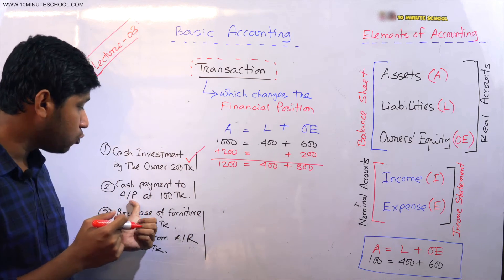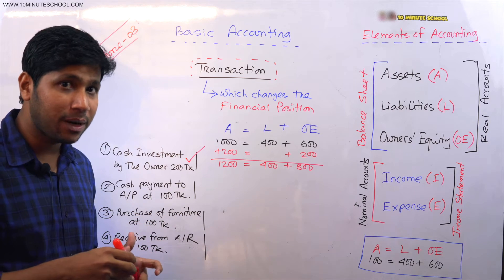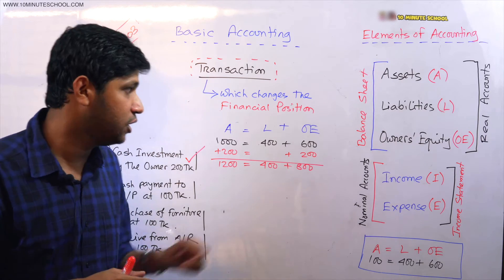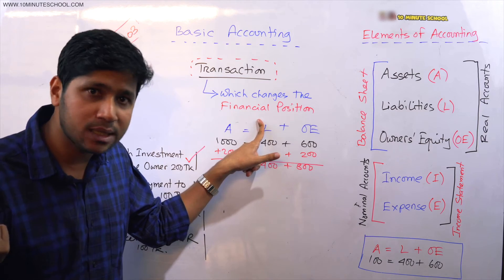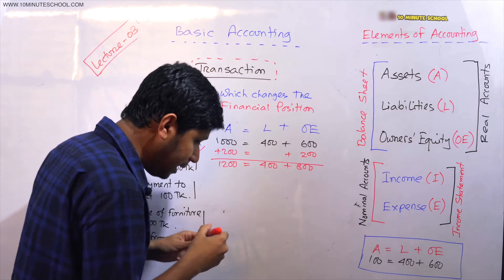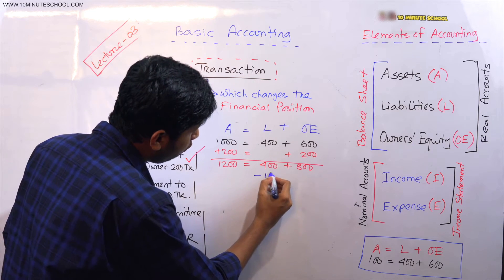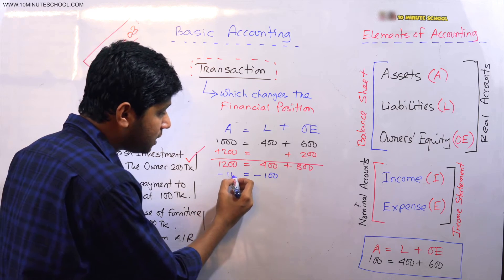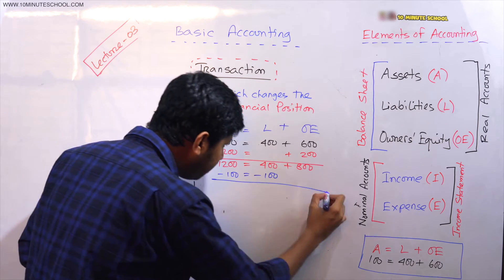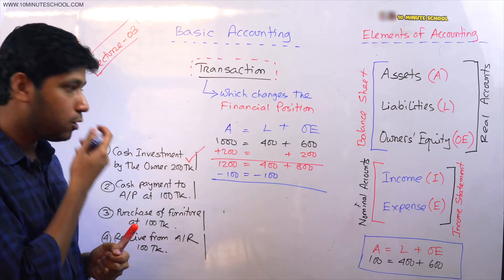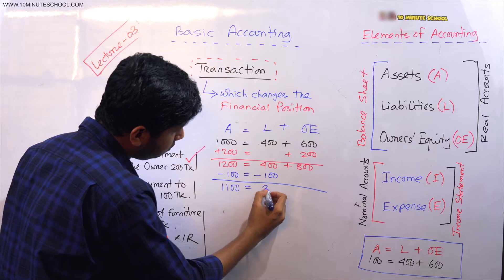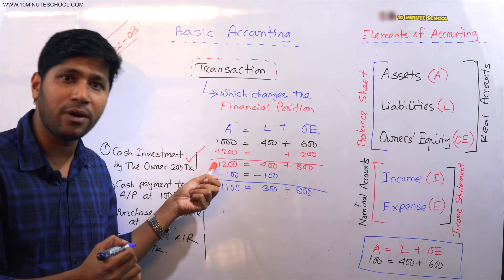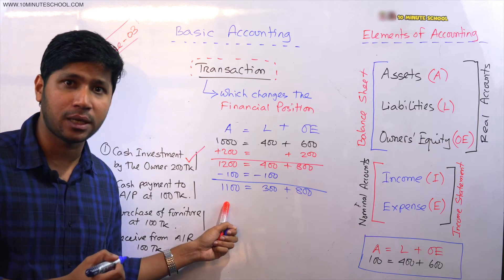Second example: Cash payment to accounts payable, 100 taka. We had accounts payable and now paid 100 taka cash. When we make cash payment, liabilities decrease. Accounts payable is a liability, so liabilities decrease by 100 taka. On the other hand, cash decreases, so assets decrease by 100 taka. After this event, our financial position changed from 1200 taka to 1100 taka (300 liabilities + 800 owner's equity). So this event changed our financial position, making it a transaction.